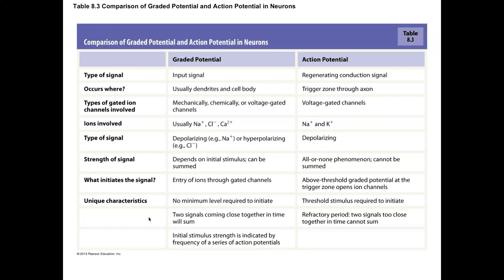Graded potentials have the ability to lead to action potentials, but not all graded potentials will trigger an action potential. Let's look at the idea of two varieties of graded potentials. If a graded potential is hyperpolarizing, this is going to be an inhibitory signal. This is actually referred to as an IPSP — inhibitory post-synaptic potential.